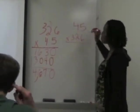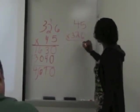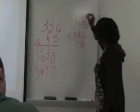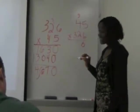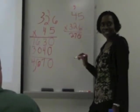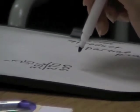6 times 5 is 30. 6 times 4 is 24, plus 3 is 27. What do we do next, Melissa? Mark a placeholder with a zero. Then multiply — 2 times 5 is 10, and we carry the 1. Two times 4 is 8, plus 1 is 9.